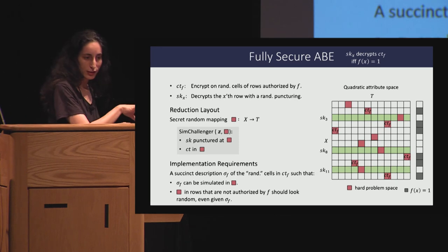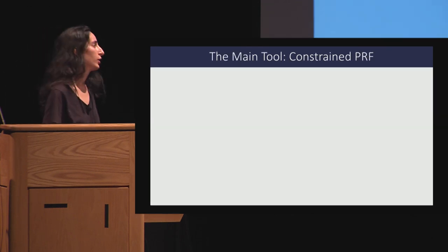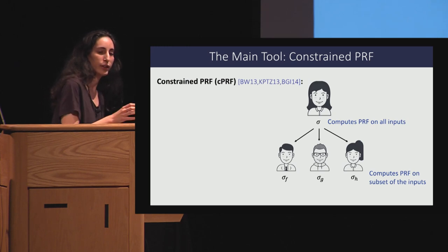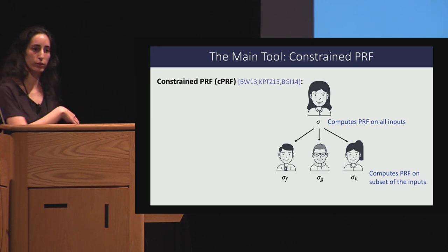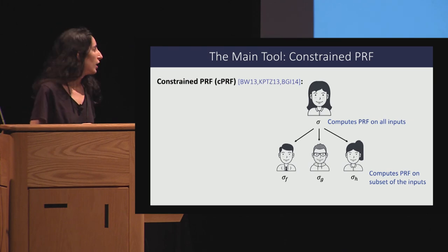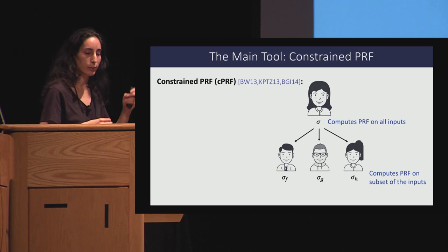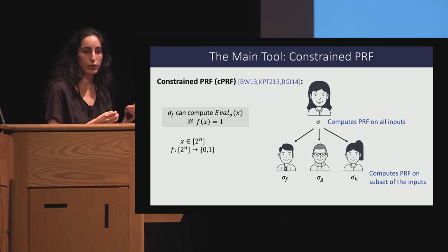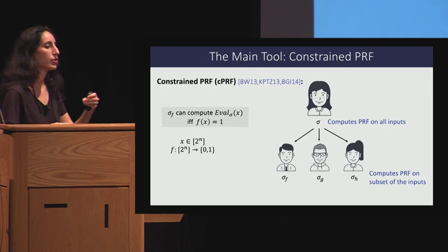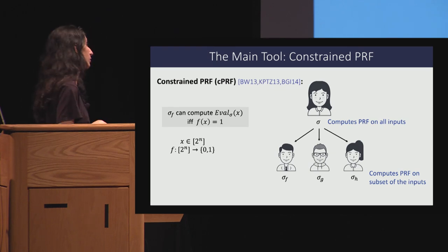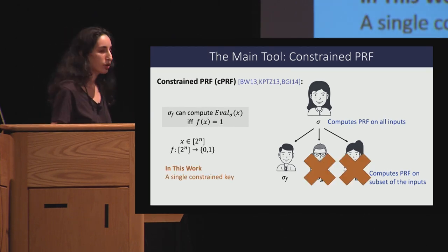Something that exactly fits those requirements is a constrained PRF. In a standard PRF, with the seed you can compute the PRF on any input; without the seed, everything looks indistinguishable from uniform. In a constrained PRF, you can also generate constrained keys that can evaluate the PRF only on a subset of inputs. Similarly to ABE, a constrained key is associated with some policy determining on which inputs you can evaluate the PRF and on which inputs it looks random. For this work, we need a constrained PRF supporting only a single key, which actually makes things easier.